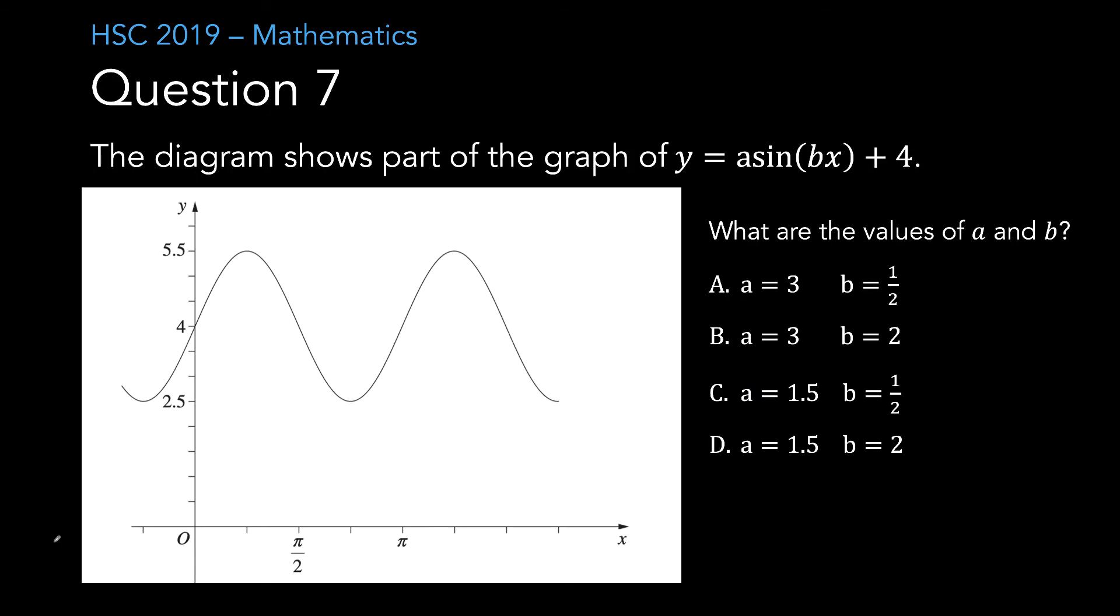Question 7. The diagram shows part of the graph of y equals a sin bx plus 4. What are the values of a and b? It can be seen that the range of the curve is 3 units. It's gone from the lowest point minus 2 and a half to the highest point of 5 and a half. So my range is 3 units, which means that the curve has been stretched 1 and a half times vertically. So my amplitude is 1 and a half. That automatically eliminates A and B.